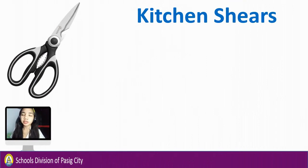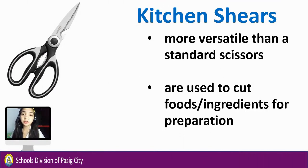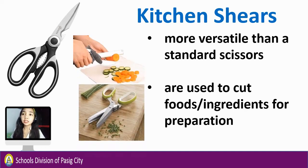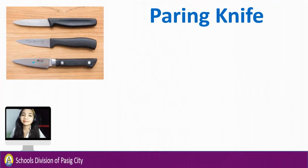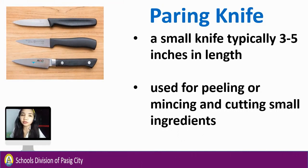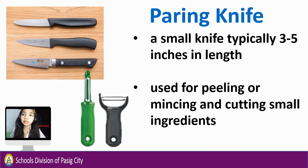Kitchen shears are more versatile than standard scissors and are used to cut foods or ingredients for preparation. Because of innovation, people have also invented cutting tools for slicing vegetables like carrots or mincing spring onions. Paring knife is a small knife, typically 3 to 5 inches in length, used for peeling, mincing, and cutting small ingredients. Aside from the paring knife, we also use the peeler to make our job easier.